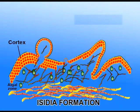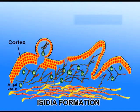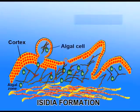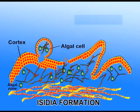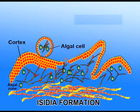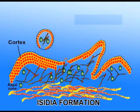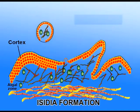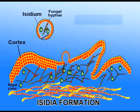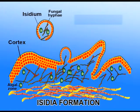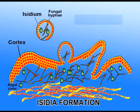Isidia formation: isidia are small, corticated outgrowths made up of both fungal hyphae and algal cells, situated on the upper surface of the lichen thallus. They are constricted at the base and are easily broken away from the thallus. A detached isidium develops into a new lichen thallus — for example, species of Parmelia.